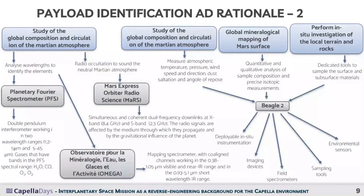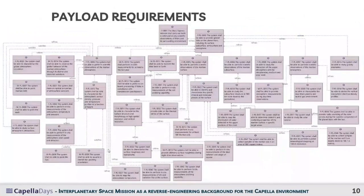Additional instruments are shown on the right, including those of the lander Beagle 2, along with their related objectives and rationale. Using Capella, we retrieved a diagram summarizing requirements for all payloads, including that the system shall perform in-situ measurements of the soil oxidizing capability and that the system shall perform in-orbit measurements for at least one Martian year.